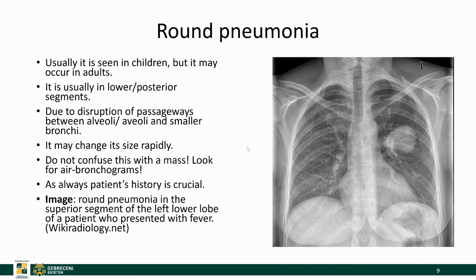Round pneumonia is more common in children, though infrequently we see it in adults as well. It usually appears in a lower posterior segment. As you can see here, it appears like a mass, which can be a little bit menacing. However, it will contain air bronchograms and its size will change quite rapidly. It's important to know the patient's history. Here you can see a round pneumonia in the upper segment of the left lower lobe — the sixth segment of the left lung.